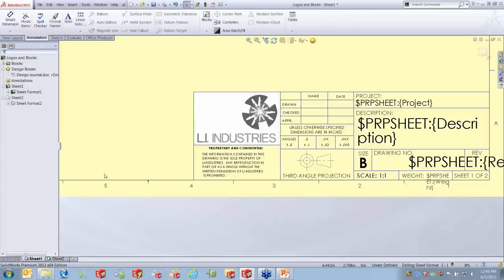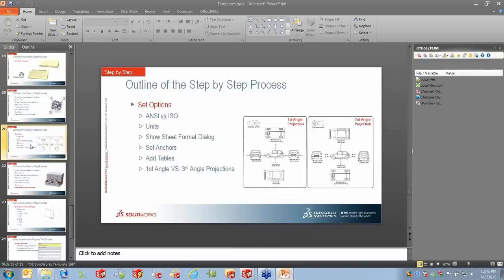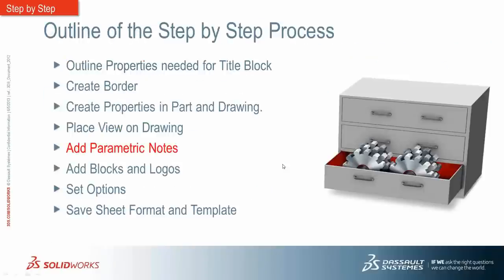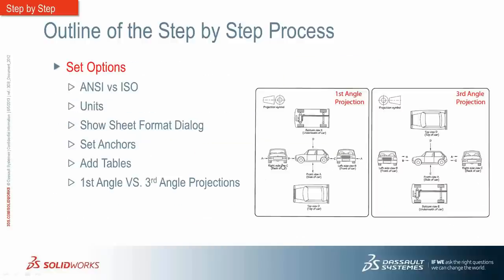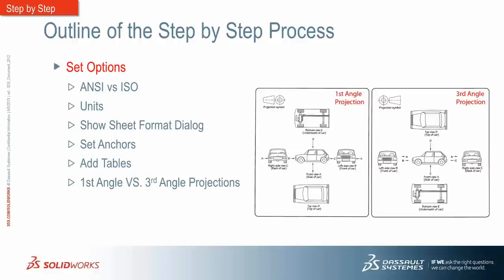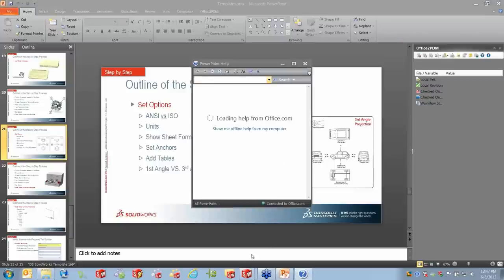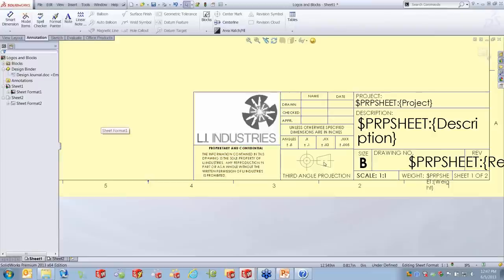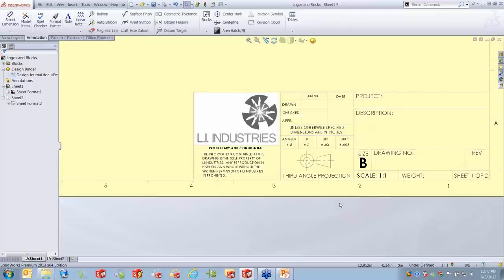For those unfamiliar with first versus third angle projection: third angle projection is common in the States, while European standards use first angle projection. It has to do with how views are folded off of the front view and how they're represented. The symbol on the title block differs depending on the projection type. I've placed the third angle projection and will also make sure the template is set to utilize third angle projection.